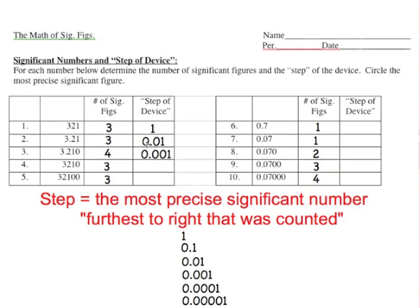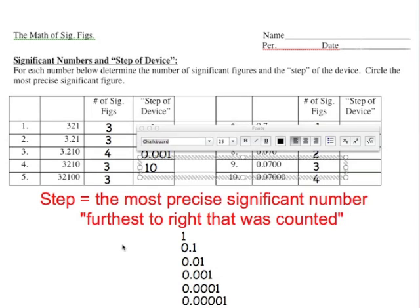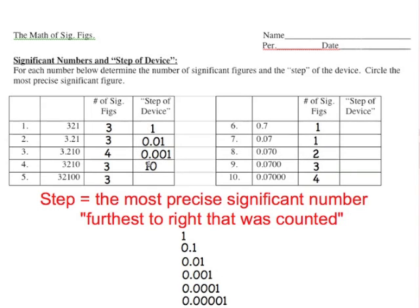This one's tricky — number four, slow down and think. The most precise significant number is the furthest one to the right that was counted. Remember, the decimal was absent here, so we ignored this zero. This is the first number we counted that's significant. This number is precise to the tens value because we ignored that zero. Using that chain of thought, 32,100 — we ignored these first two zeros, so the precision is the hundreds.